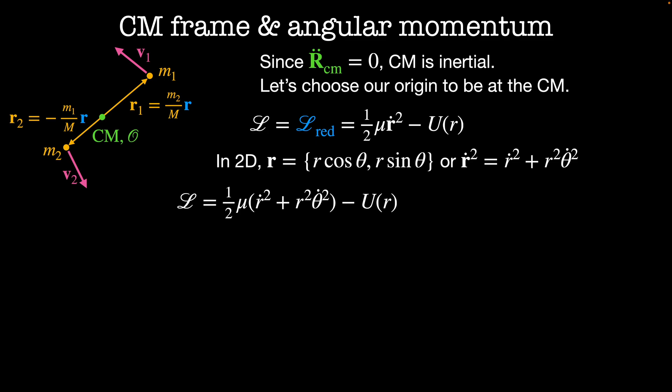You'll notice that the transformation θ goes to δθ leaves the Lagrangian unchanged because θ dot is the same either way. So according to Noether's theorem, dL by dθ dot is a conserved momentum, which equals μ r squared θ dot.